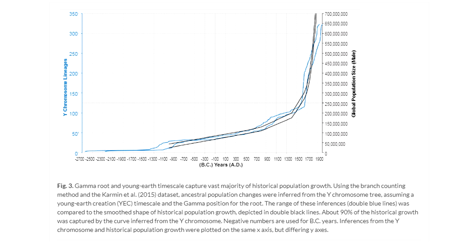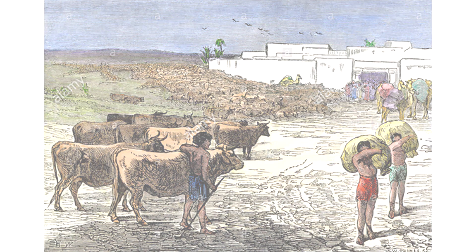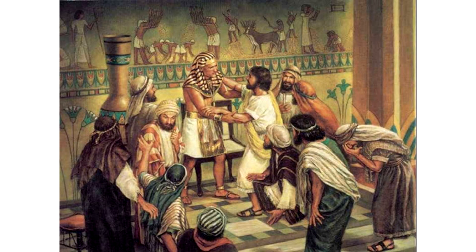Along this line of reasoning, a biblical timescale predicts that the last 4,500 years of human population growth should be reflected in the branching events of human lineages in the Y chromosome tree data. And interestingly, the population growth and Y chromosome data also appear to fit well with specific shifts in population structure in ancient history, such as the global famine described in the Bible during the life of Joseph as a ruler in Egypt in the later chapters of Genesis.